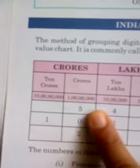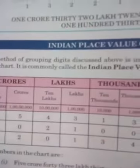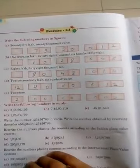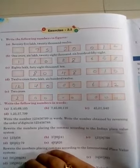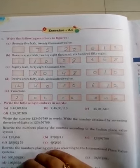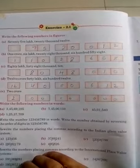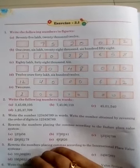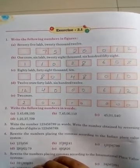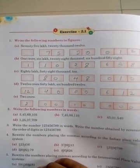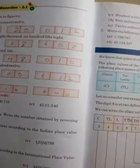Then come to Exercise 2.1. For question number one, you just have to note it down from the book — no need to write anything extra. I'll send you a photo of question number one with the homework. You can write it yourself also, but I'll send the photo anyway. Then let me show you how to do question number two.